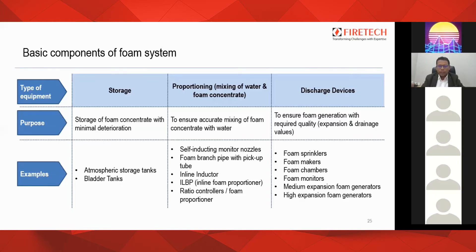Proportioning is nothing but mixing of water and foam concentrate. Its purpose is to ensure accurate mixing of foam concentrate with water. UL has witnessed the complete mixing of foam concentrate into water across various flow ranges at their test facility, and this is what gives the UL listing. Examples of proportioning equipment include self-inducting monitor nozzles, foam branch pipes with pickup tube, inline inductor, inline foam proportioner, and ratio controllers — these are the five basic categories of foam proportioning equipment.